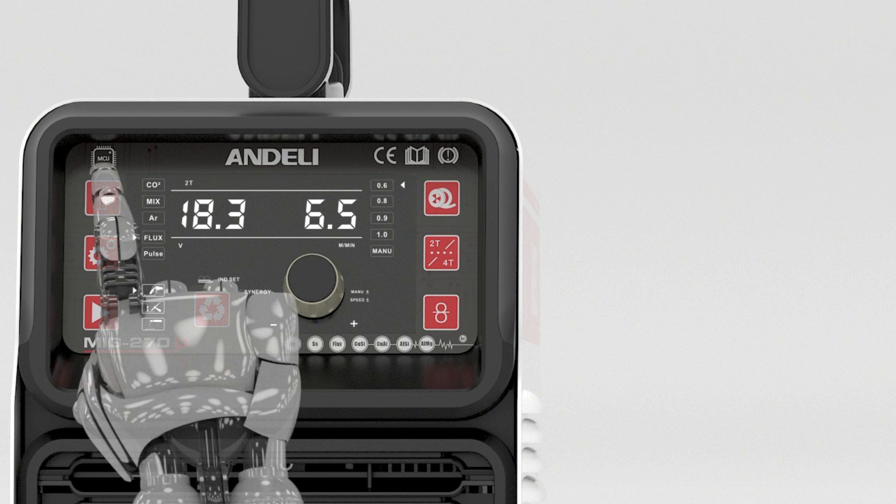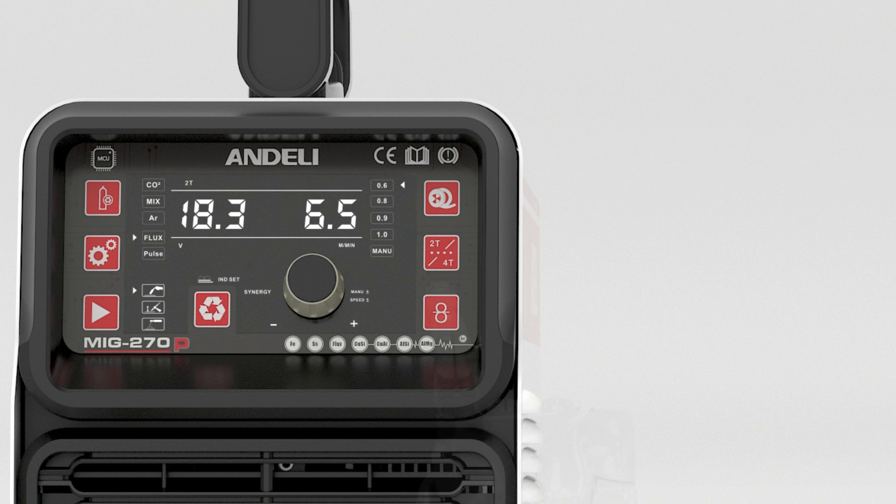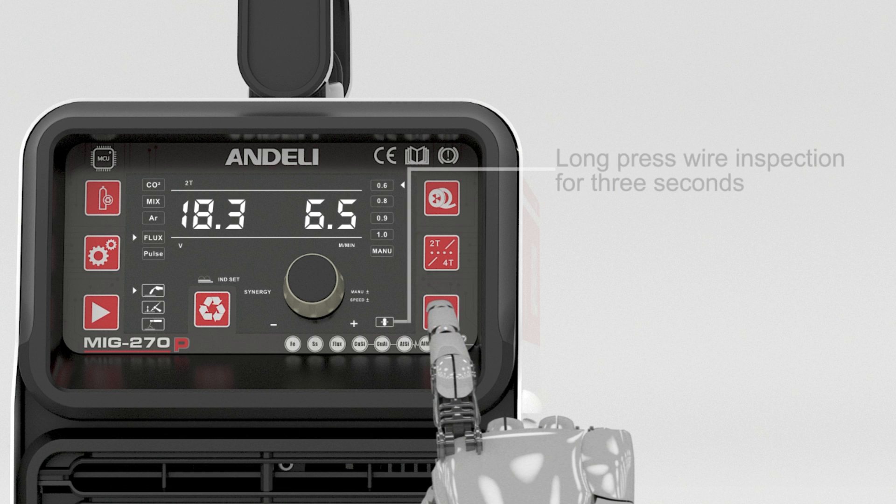Press the gas test button for 3 seconds to check whether the gas cylinder is ventilated to the torch head. Long press wire inspection for 3 seconds, automatic wire feeding is turned on.